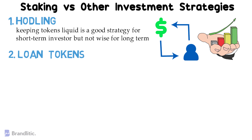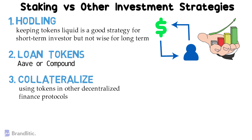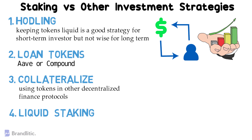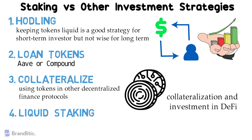Second, loan tokens — for example, using lending protocols like Aave or Compound. Third, using tokens as collateral — for example, issuing DAI with the Maker Vault, or using tokens in a decentralized finance protocol. Fourth, liquid staking: liquid staking combines the benefits of staking with the liquidity of the above-mentioned strategies. The staked positions are tokenized, allowing one to receive liquidity. The liquid tokens provide further leverage through collateralization and investment in DeFi.